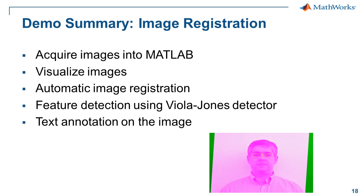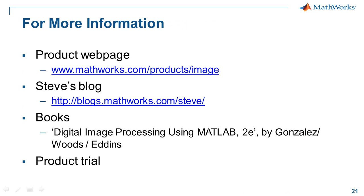To summarize the demo: we acquired infrared and standard webcam images, visualized the data throughout the algorithm process, used automatic image registration to align the images, then used feature detection with the Viola-Jones detector in the Computer Vision System Toolbox to find the eyes. Finally, we found the relative temperature and wrote it on the image for the user. For more information, there's the product page, Steve Eddins' blog on image processing topics, and the book 'Digital Image Processing Using MATLAB' co-authored by Steve Eddins. You can also try a free product trial to experiment with your own algorithms.